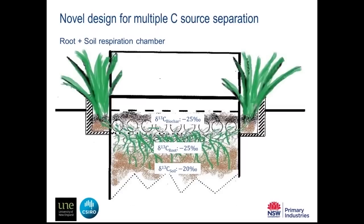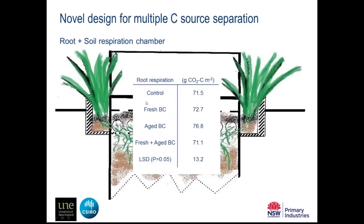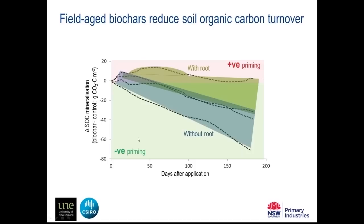That's what the last treatment is about — a secondary application of biochar. Again, the biochar signature is very similar to plants, so we used pulse labelling to enrich the root signal and quantify root respirations across the four treatments: control, fresh biochar, aged biochar, and second application. Again, biochar treatment had no impact on root respiration. Interestingly, we found the field-aged biochar can reduce soil organic carbon turnover rate — the so-called negative priming. This time, both planted and unplanted systems showed the same effect: biochar slowed down soil organic carbon loss.